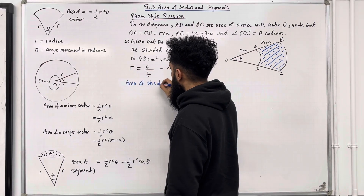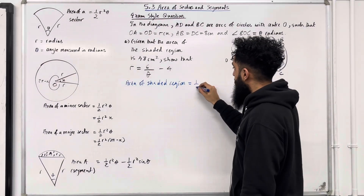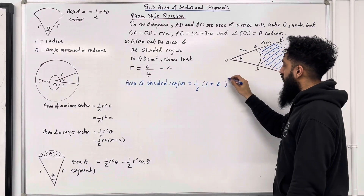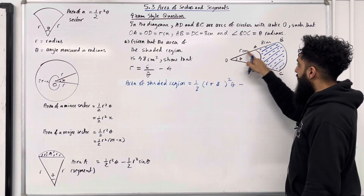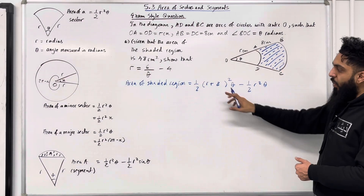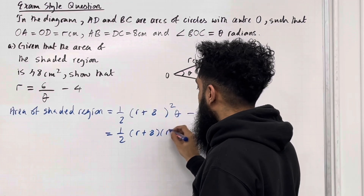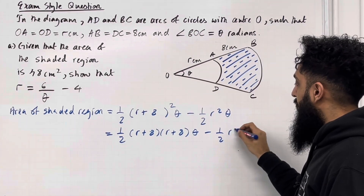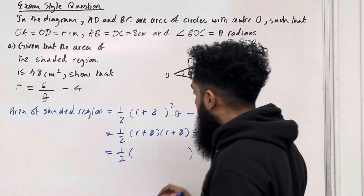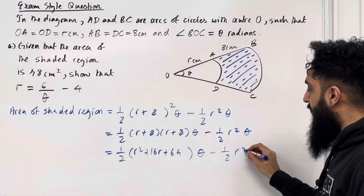The area of the shaded region equals the area of the large sector minus the area of the small sector. The large sector has radius R plus 8, so it contributes one half times (R plus 8) squared times theta. The small sector contributes one half R-squared theta. Expanding (R plus 8) squared gives R-squared plus 16R plus 64, so the expression becomes: one half (R-squared plus 16R plus 64) times theta, minus one half R-squared theta.